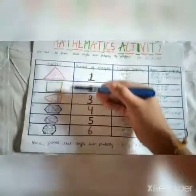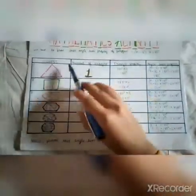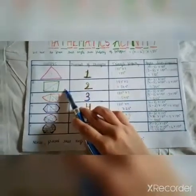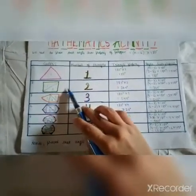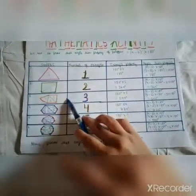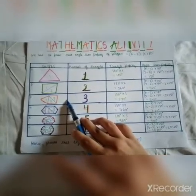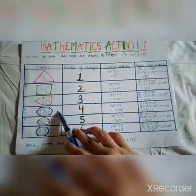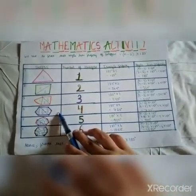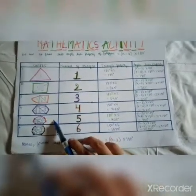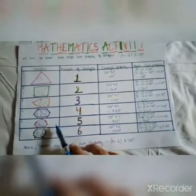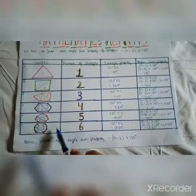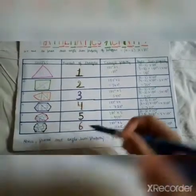Here we have taken 6 shapes, from triangle to octagon. The first one is a triangle which has 3 sides. The second one is a square having 4 sides. The third one is a pentagon with 5 sides. The fourth one is a hexagon having 6 sides. The fifth one is a septagon having 7 sides, and the sixth and last one is an octagon having 8 sides.